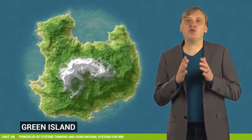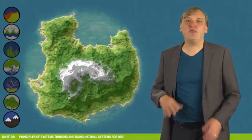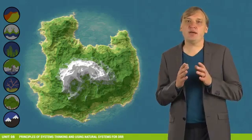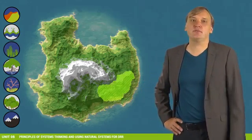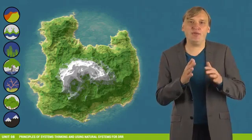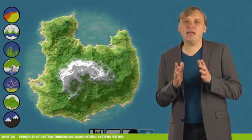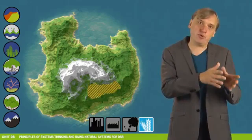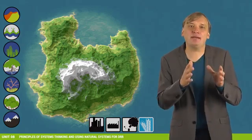Let's now come back to ECODRR and EBA and apply our new knowledge on system thinking. In Unit 7 we introduced some ecosystems of particular importance for disaster risk reduction and adaptation, among them coastal dunes, mangroves, seagrass beds, coral reefs, wetlands and protection forests. However, these ecosystems are often only relatively small features in the landscape. But to manage a larger region properly, we have to consider the landscape as a whole, including agricultural, forestry, urban, industrial and other strongly human-impacted areas.